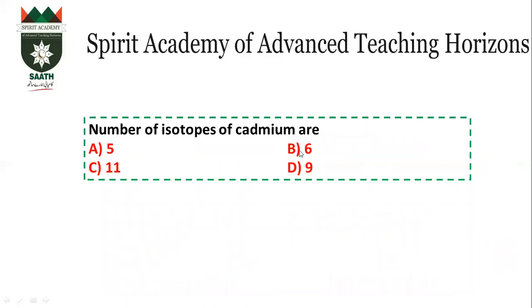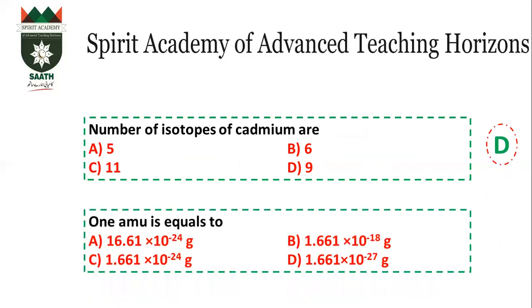The number of isotopes of cadmium is 9, so the answer becomes D. One AMU is equal to — you should know the value of AMU: 1.661 × 10⁻²⁴ grams. The answer is C. Note that this was incorrectly marked as A — the correct answer is C: 1.661 × 10⁻²⁴ grams.